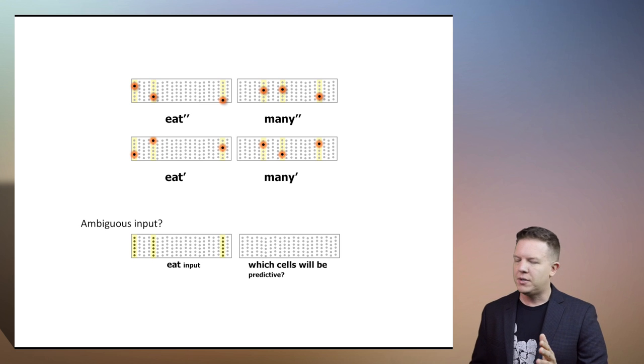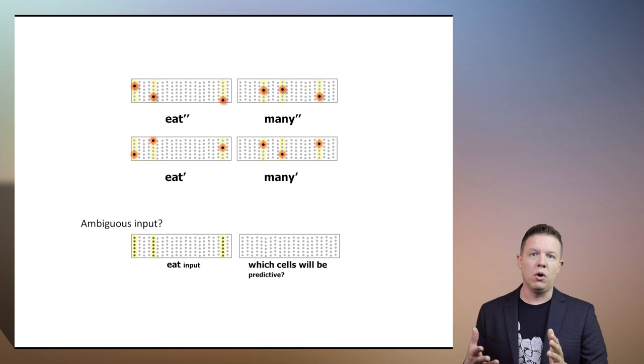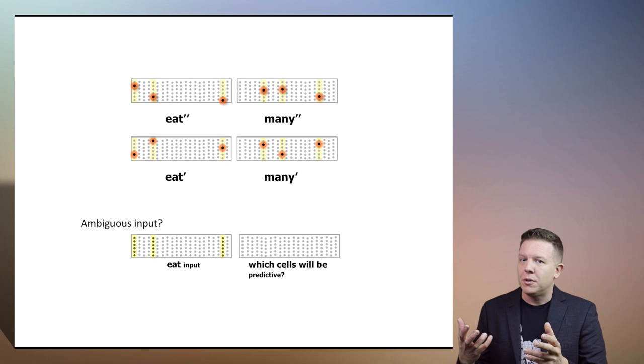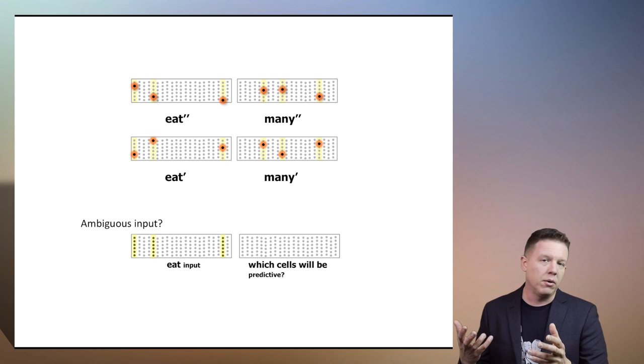What if we sent the spatial pattern eat in as the first element of the sequence with no context at all? So the system won't know what eats — is it a boy? Is it a girl? We don't know.